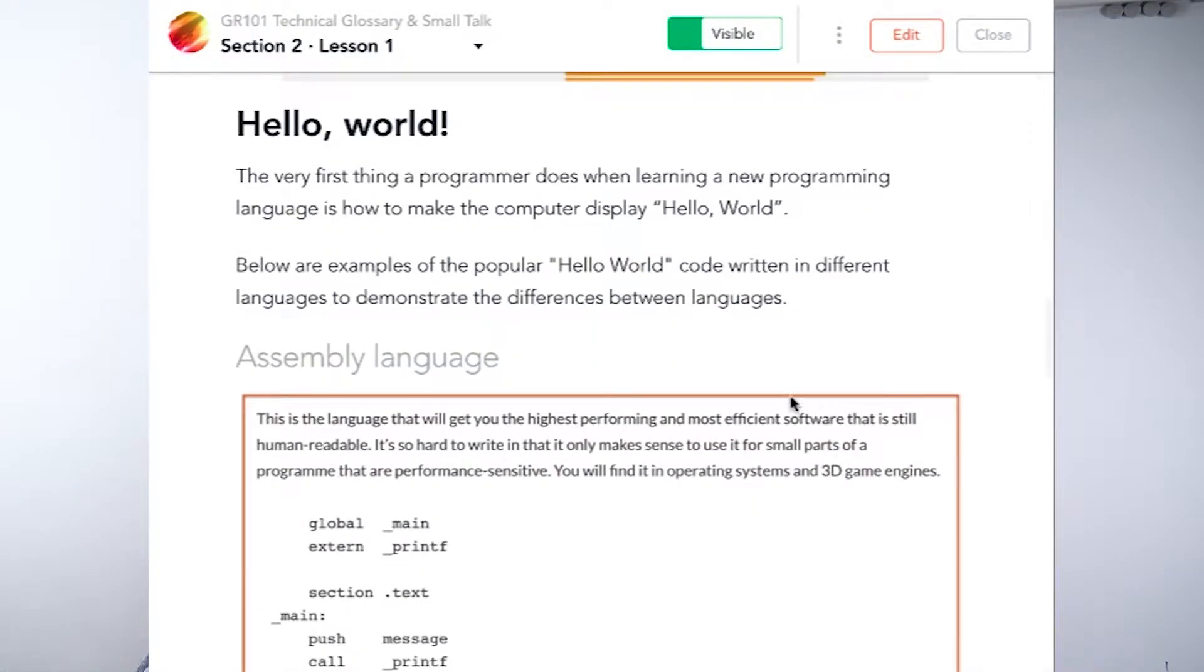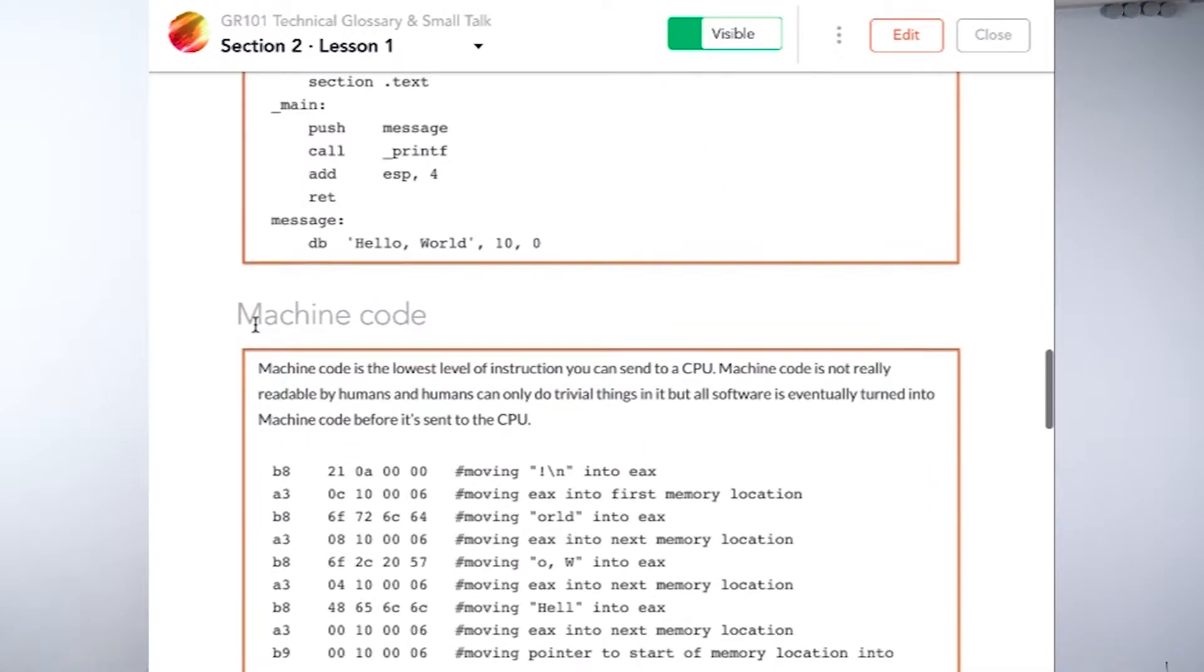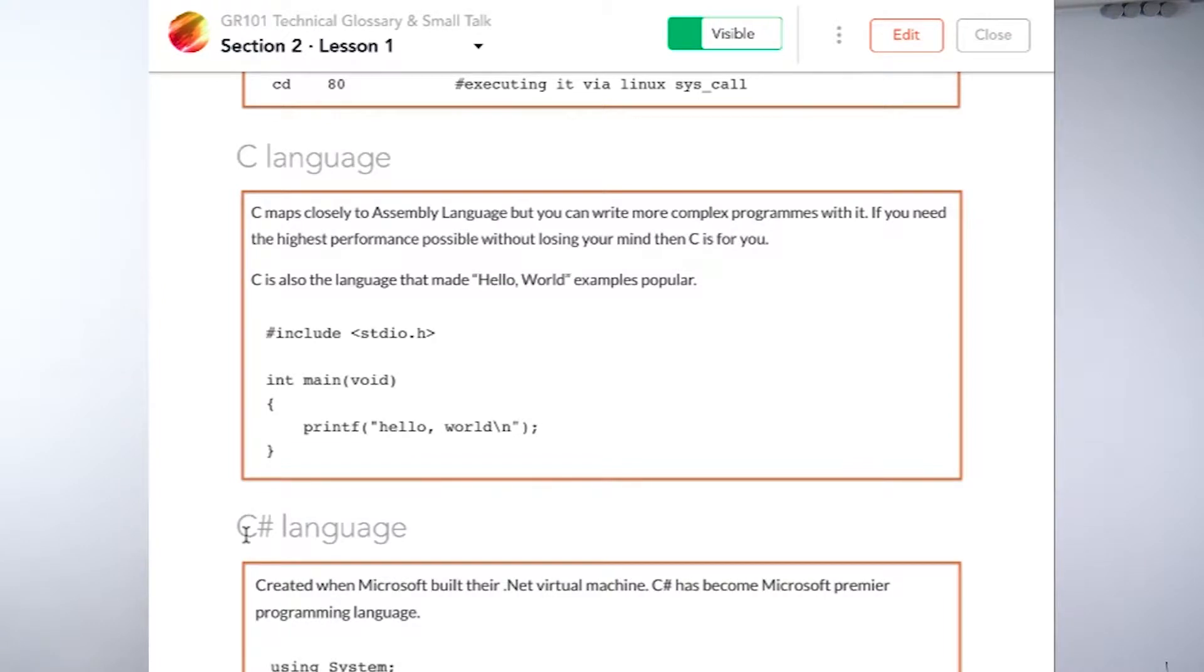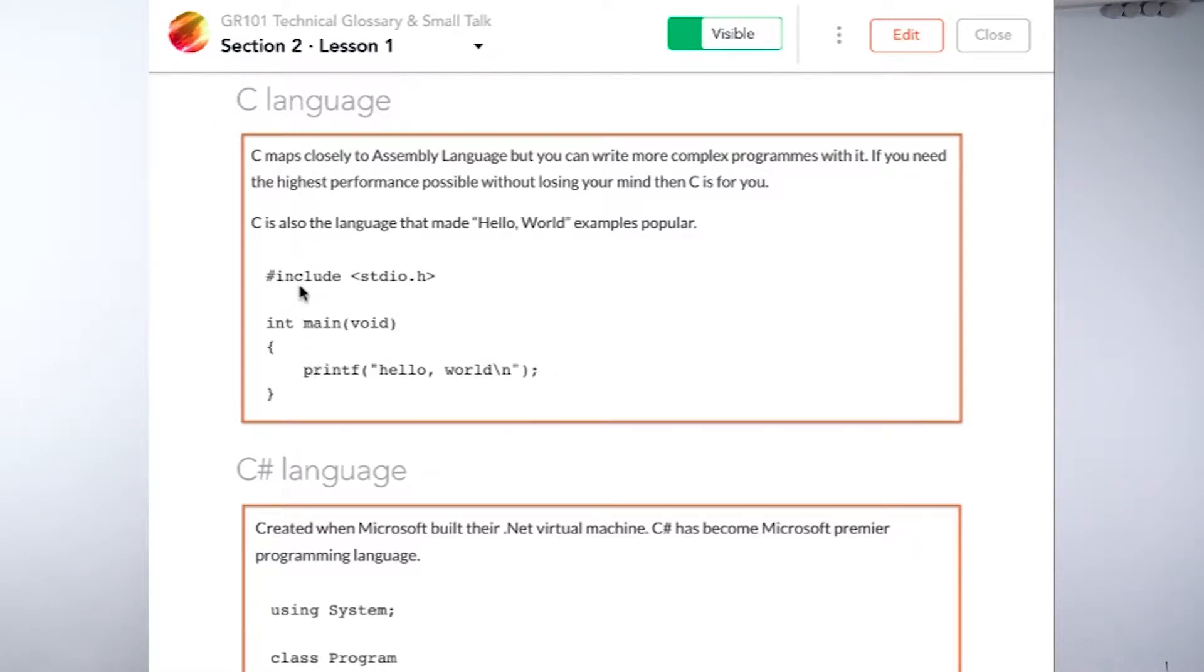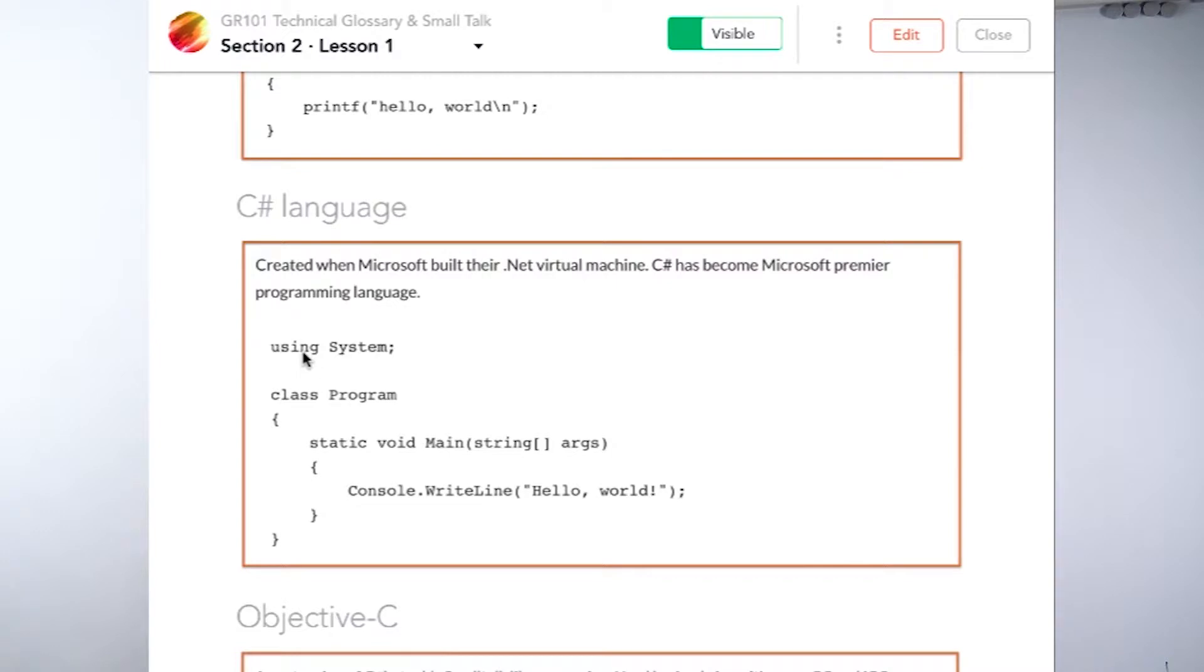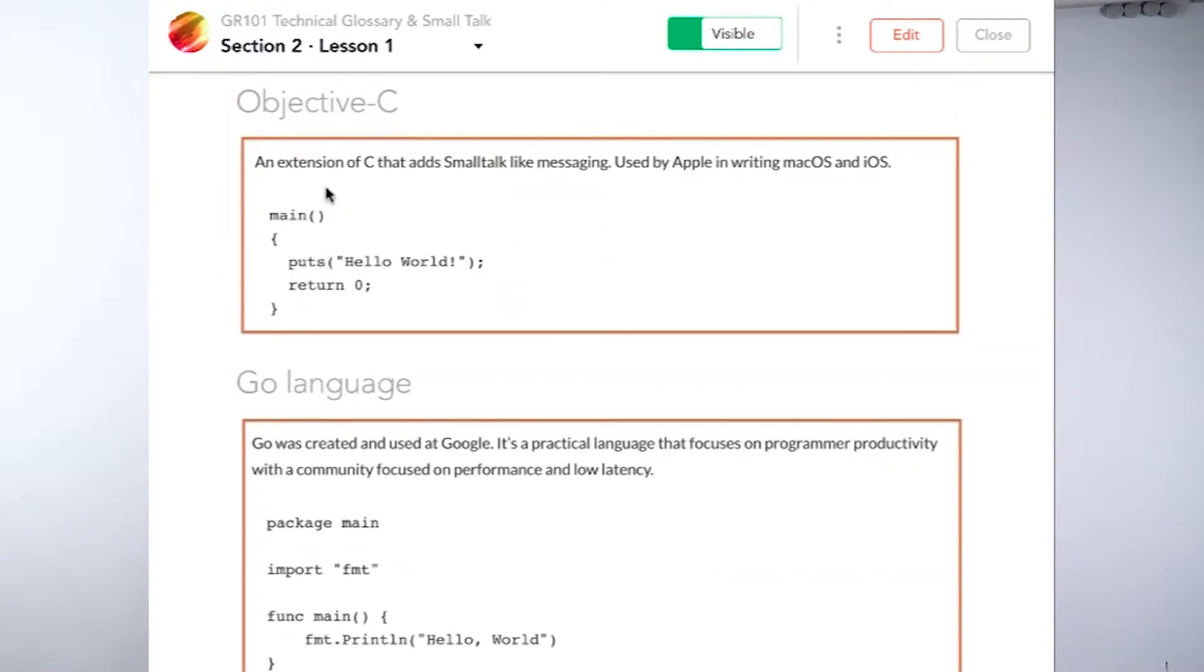I have here different languages such as assembly language or machine code, C language, C sharp language. You can see the Hello World for example in C language is relatively easy. A developer just needs to include this standard library, some header file, standard io.h and then he just prints Hello World. Hello World is a text that usually appears in a console or on whatever frontend is used at the moment. C sharp language a little bit more complicated, you can see here, but still not difficult. Objective C relatively easy. You can see here a developer writes a function main and then puts Hello World, returns 0. That's it.